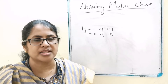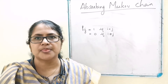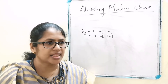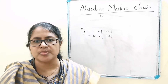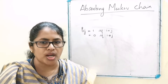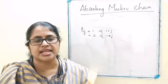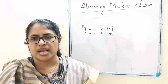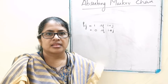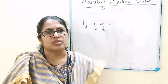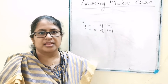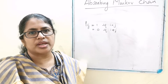That is the first condition for the absorbing chain. The second condition is: it is possible to go from every non-absorbing state to at least one absorbing state, not necessarily in one step. Okay, let's do a problem.